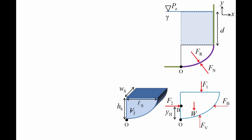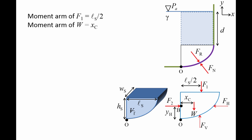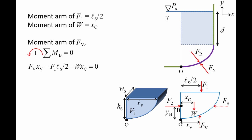F1 acts at the center of the top surface of the fluid body, so the moment arm of F1 is Ls divided by 2. The moment arm of the weight is equal to the distance between the centroid of the fluid body and the left planar surface; you can look up this distance in tables for simple shapes. Notice that the moment arm of Fv, which we will call XV, is the same whether we take the moment about point O or point B. Since the gate is not moving, the sum of the moments about any point must be zero. To determine XV, we calculate the sum of the moments about point B and set it equal to zero. By taking the moment about point B, the moment arms of F2 and Fh are zero. Taking counter-clockwise as positive, the sum of the moments is Fv times XV minus F1 times Ls divided by 2 minus W times Xc equals zero, and we can rearrange to solve for XV.